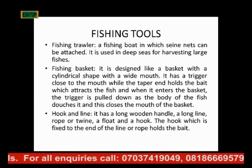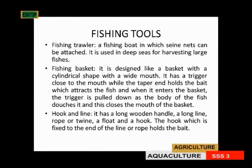Hook and line consists of a long line — a rope or twine — with a float and a hook. The hook has a bait, which is what attracts the fish. The bait can be a smaller fish, an earthworm, or a small animal that the fish will want to feed on. When the fish opens its mouth to take the bait, the hook gets into its throat. That is the simple process of using hook and line.